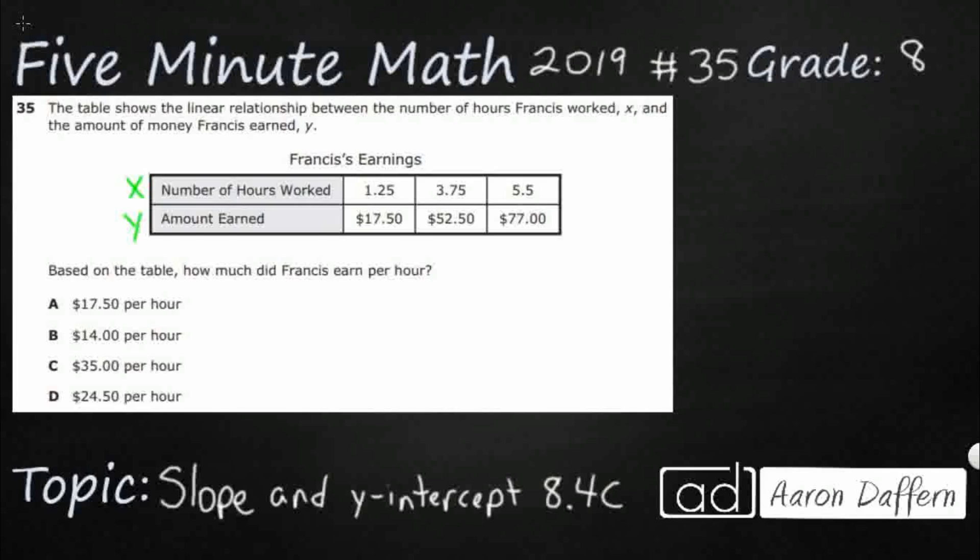Well, we can see here that we've got $17.50 for 1.25 hours, $52.50 for 3.75 hours. What we don't have is any really simple 1 hour, 2 hour, 3 hour, just whole number or integers for our number of hours worked. They're going to give us decimals because it's going to be too easy if for 1 hour they give you the amount earned, because that would be your rate right there. And that's really what we're looking for.